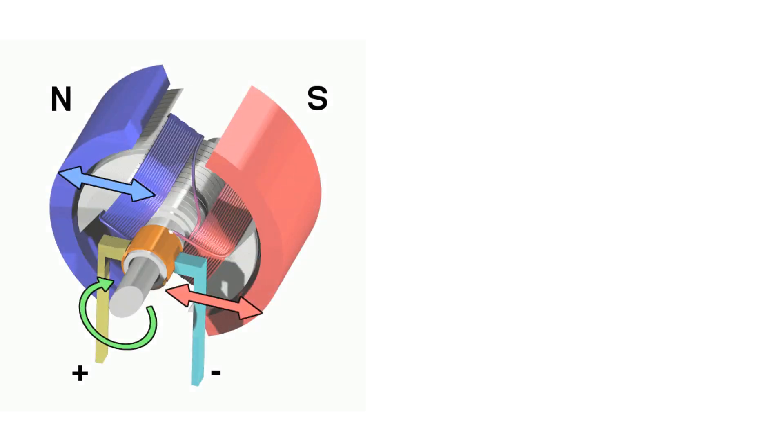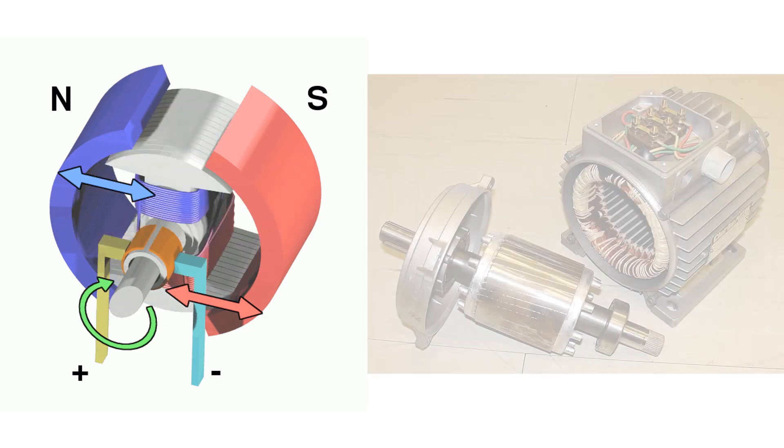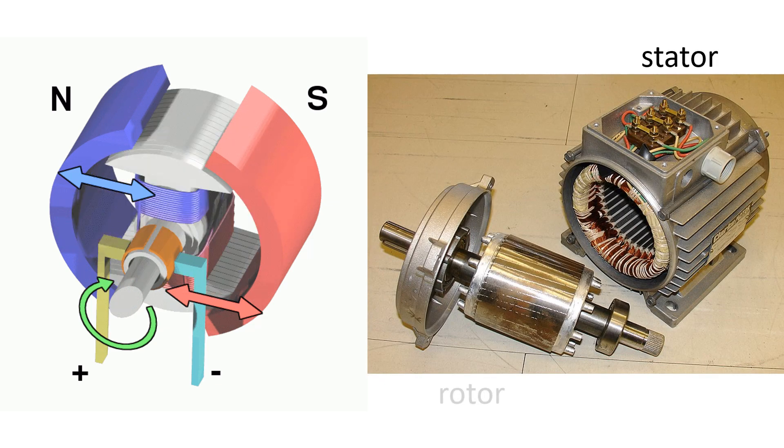An electric motor is a machine that converts energy from electrical to mechanical. It has two types of components, stationary and rotational.